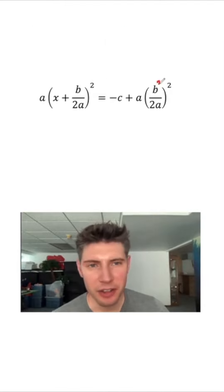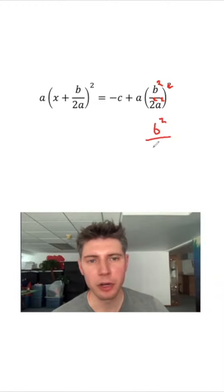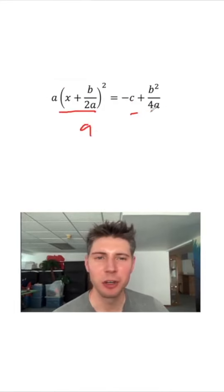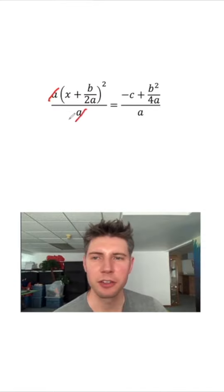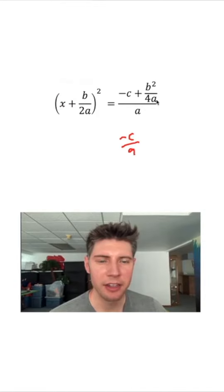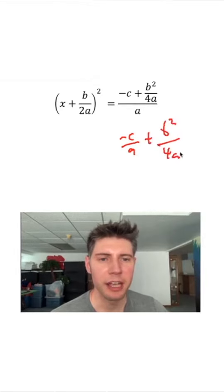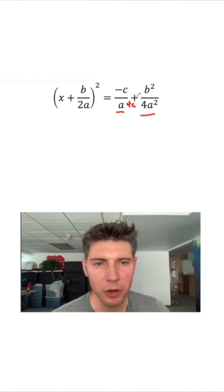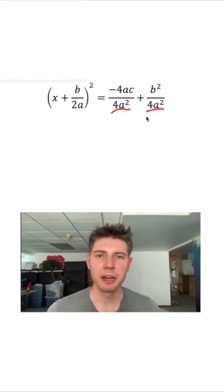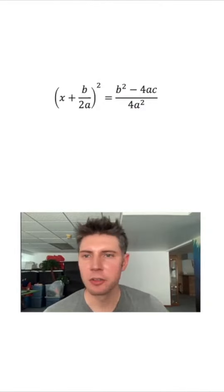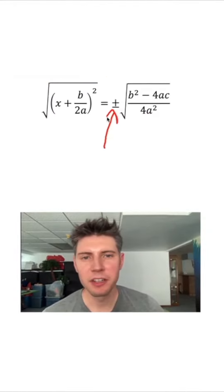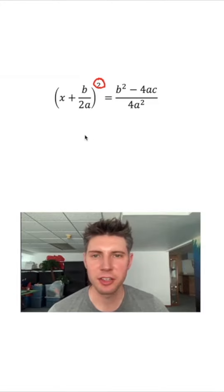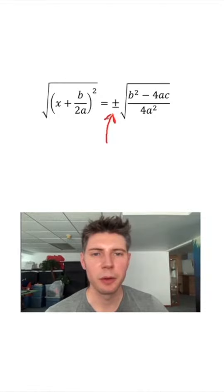Next, we distribute the squared to everything on the inside, giving us b squared over 4a squared. One a can cancel with one of the other a's. Then we divide both sides of the equation by a: on the left side the two a's cancel; on the right side we get negative c over a and b squared over 4a squared. We have two fractions on the right-hand side that need a common denominator. Multiplying top and bottom by 4a gives both fractions a denominator of 4a squared, and we combine them into a single fraction.